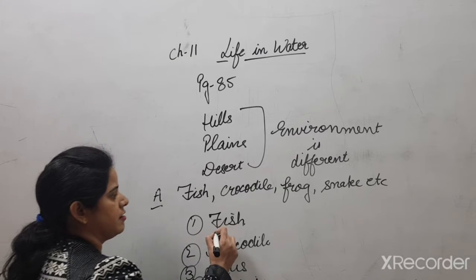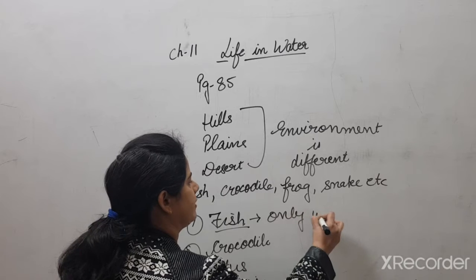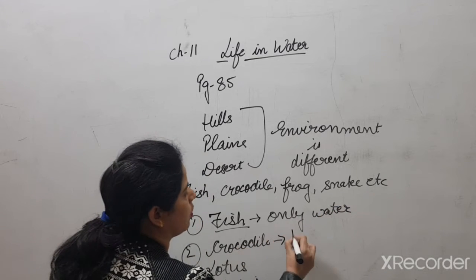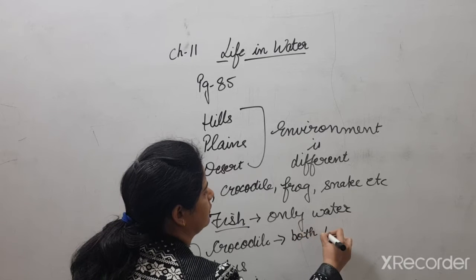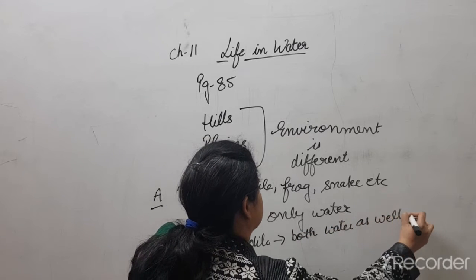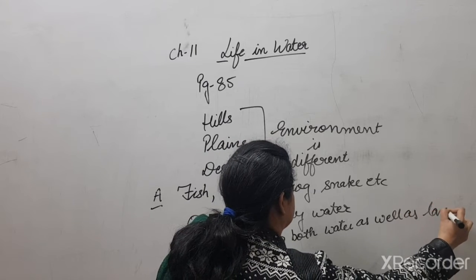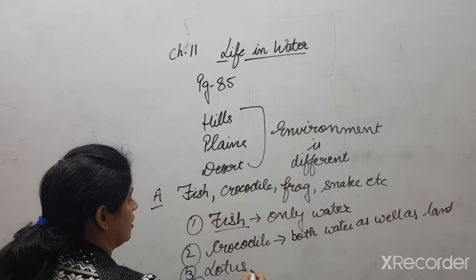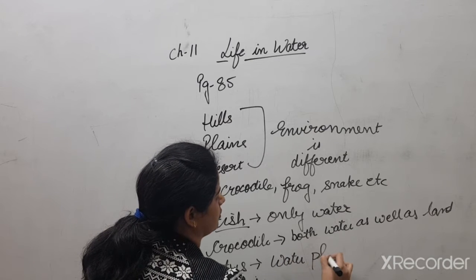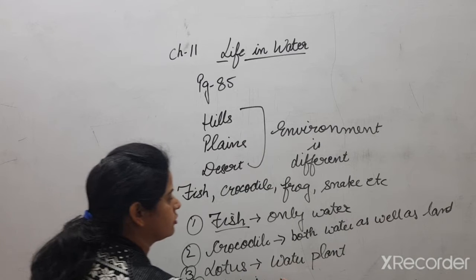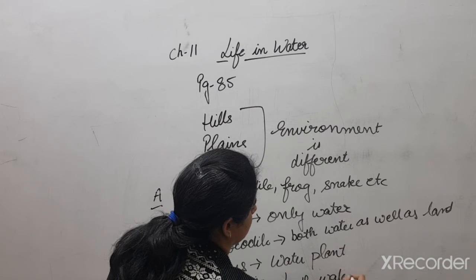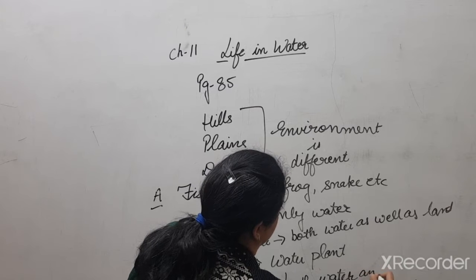Fish lives only in water. Crocodile lives in both water as well as land. The third, lotus, is a water plant. And tortoise also lives in both water and land.